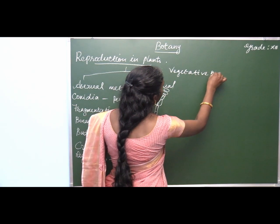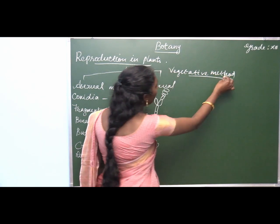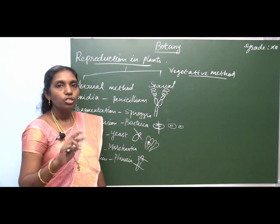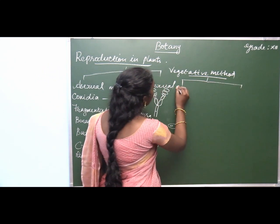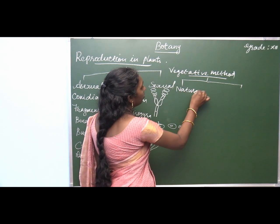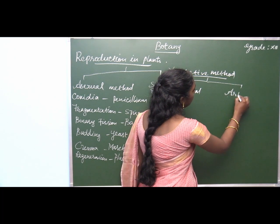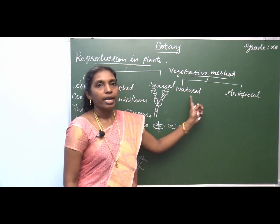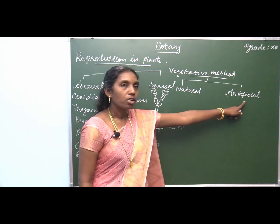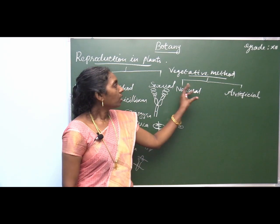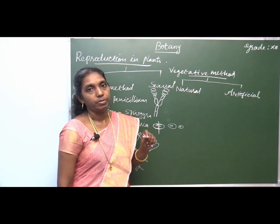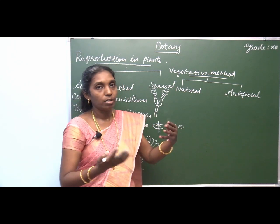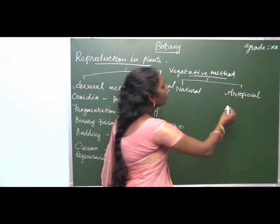In the vegetative method of reproduction, it is again classified into two categories: the natural method and the artificial method. Vegetative buds or adventitious buds are developed naturally or by artificial methods.